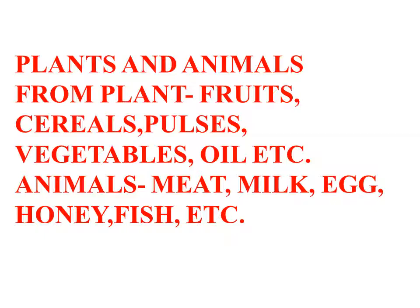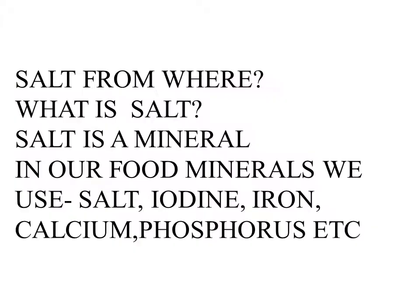Such edible items are called ingredients. From plants we get fruits, cereals, pulses, vegetables, oil, etc. From animals we get meat, milk, eggs, honey, fish, etc. These two are the sources of food.